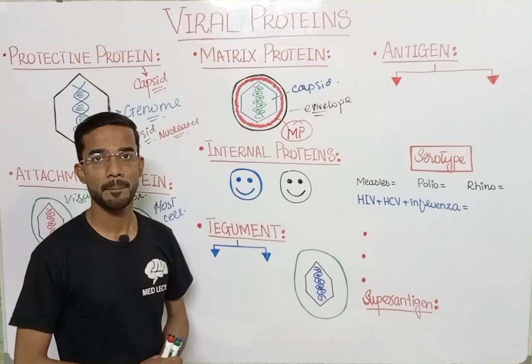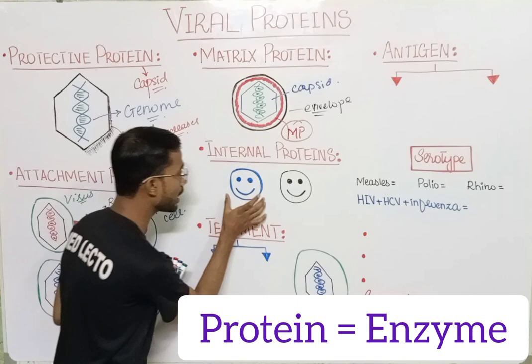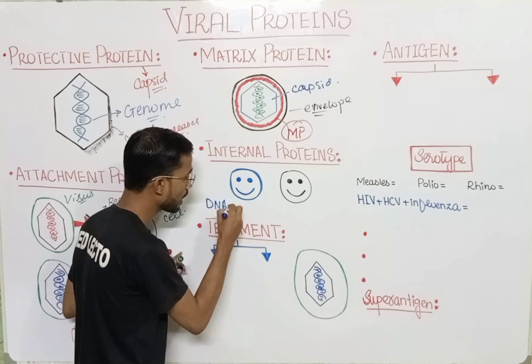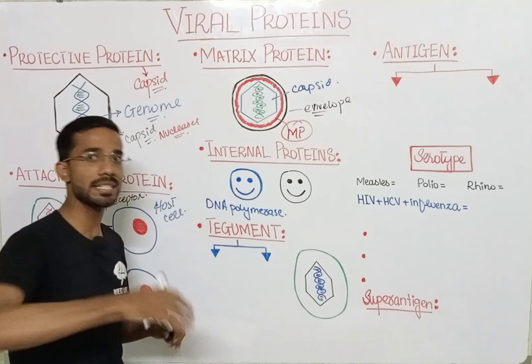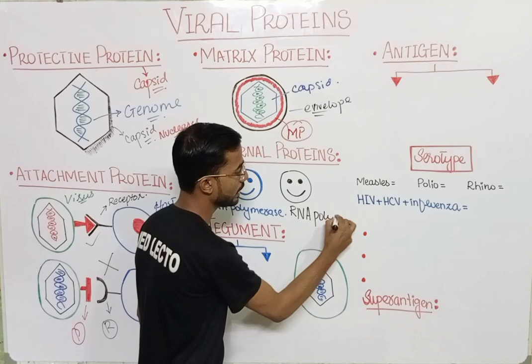Next is the internal protein. There are different proteins that are present inside the viruses. For example, there is DNA polymerase present inside some viruses, and in others there is RNA polymerase. These are basically the internal proteins.